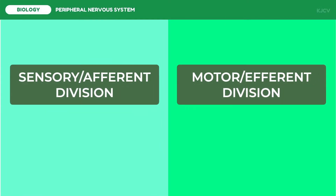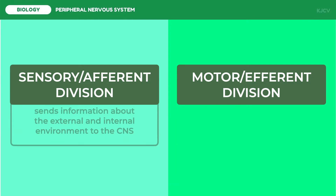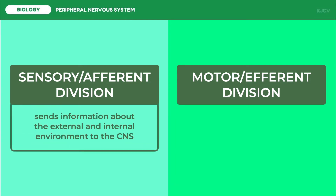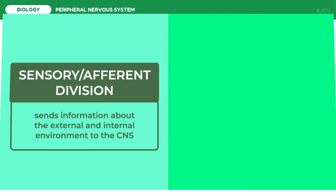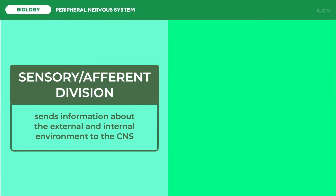The afferent division of the PNS sends information about the external and internal environment to the central nervous system, or CNS. Since we get information from what we sense, this is also called the sensory division. On the other hand, the efferent division consists of nerve fibers that carry information between the central nervous system and other parts of the body. Since this division affects what the brain tells us to do, it is also called the motor division.